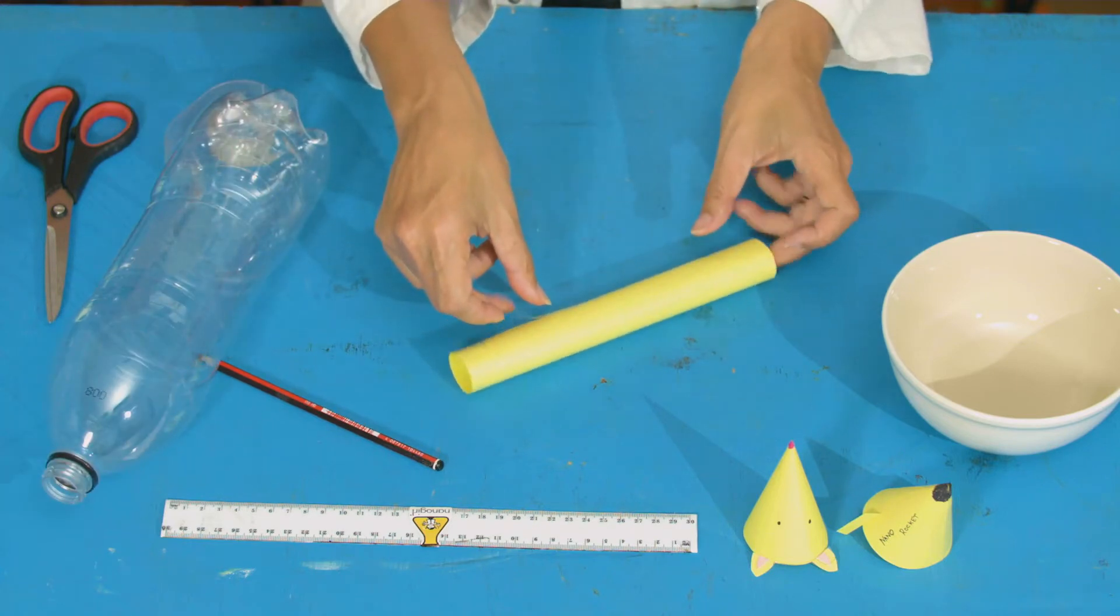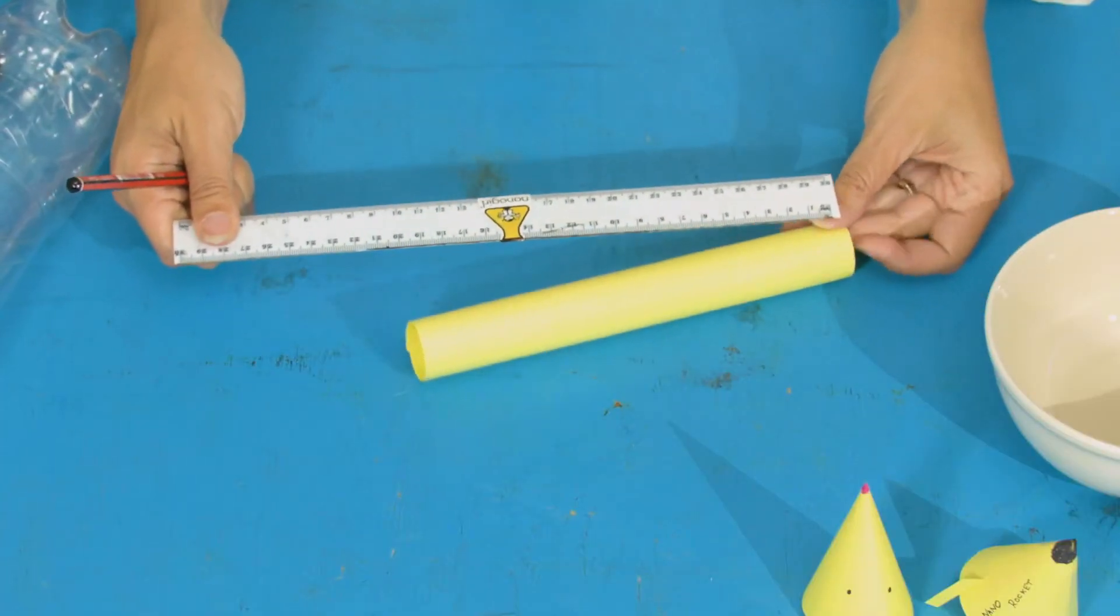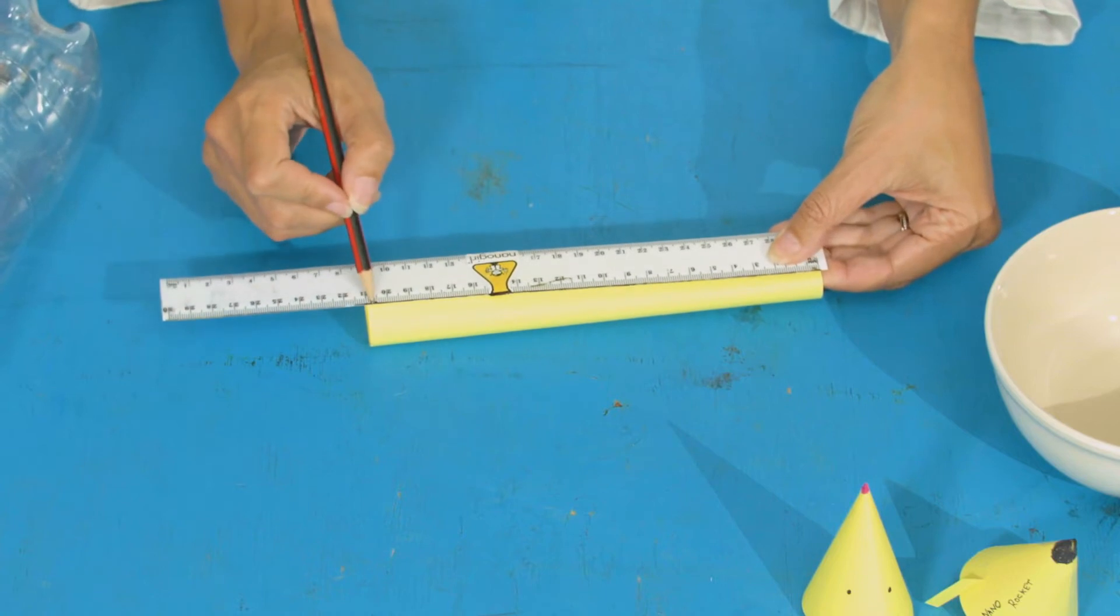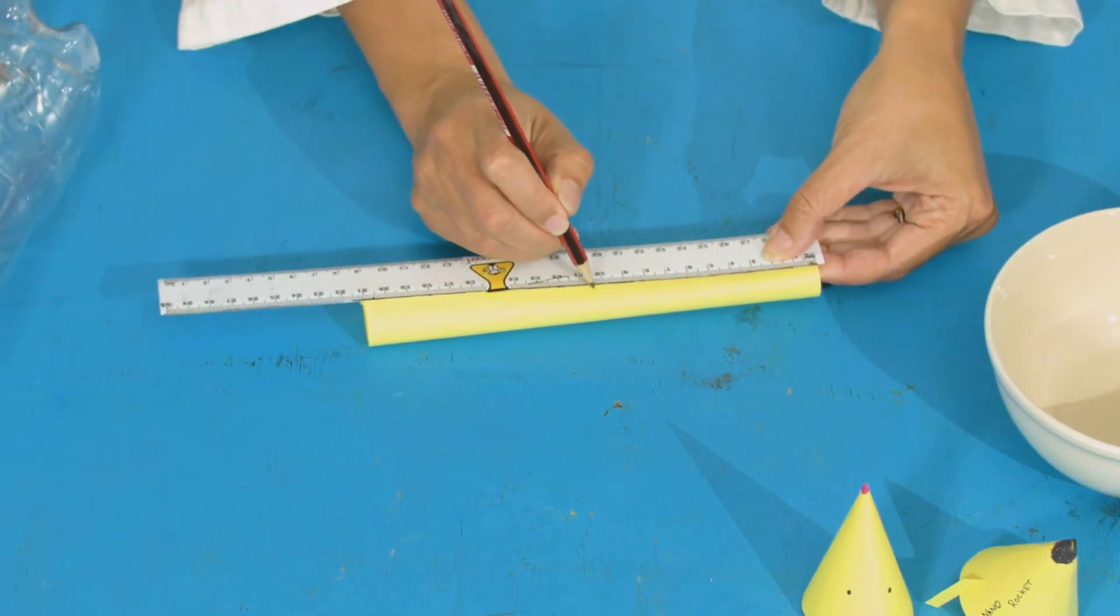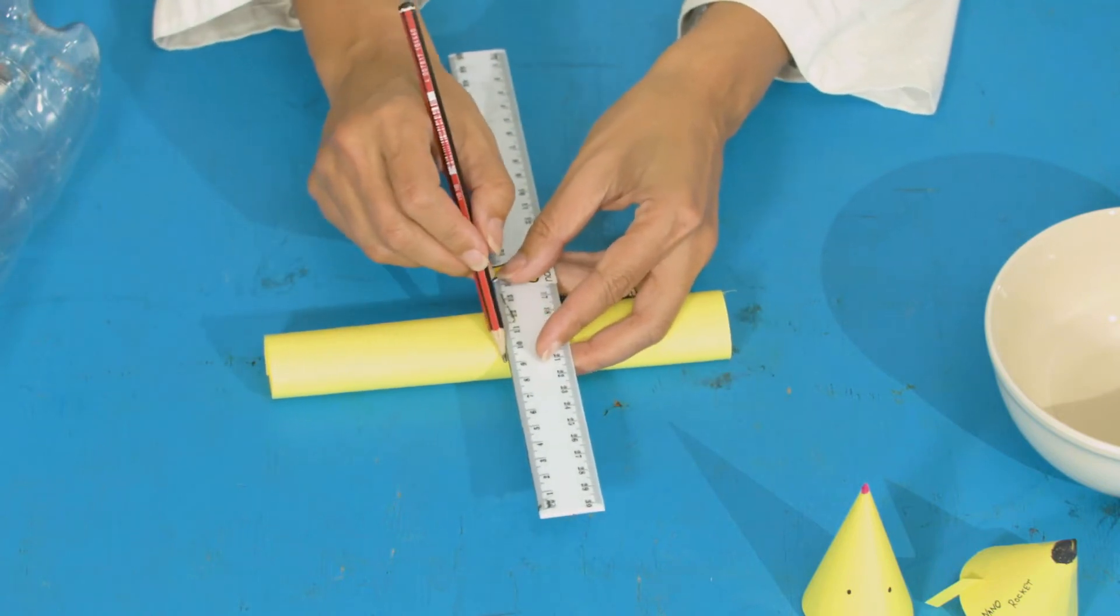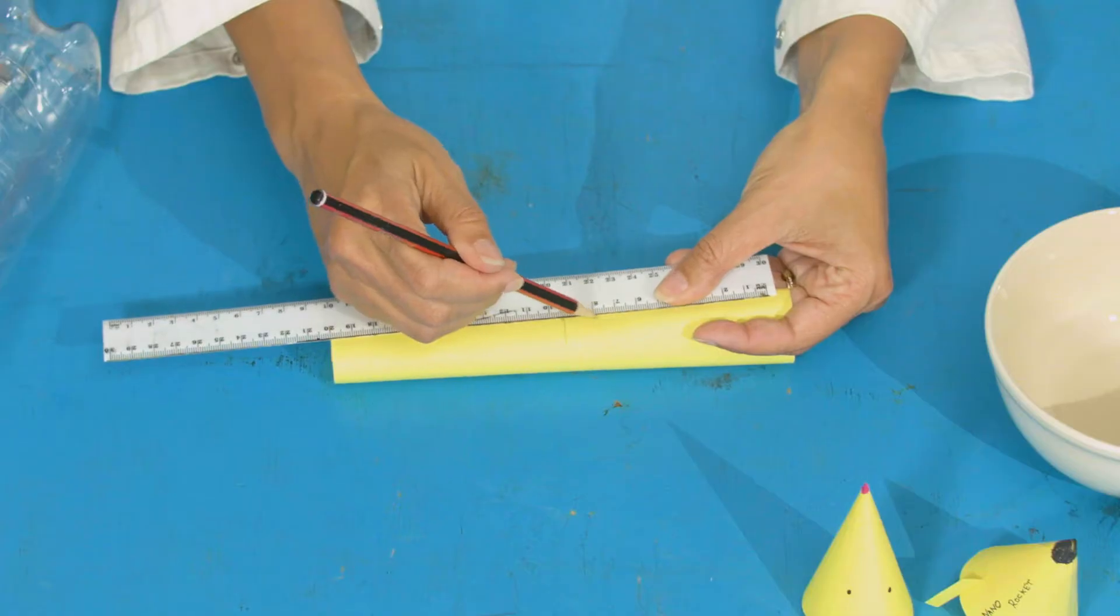Take your ruler and measure halfway down your tube. So my tube is about 21 centimeters so half of that is ten and a half. Draw a line with your ruler horizontal down that middle mark, and then go 90 degrees and do one across.